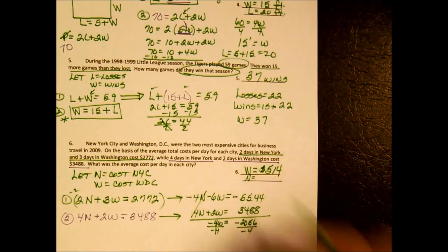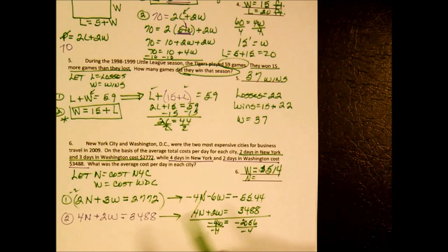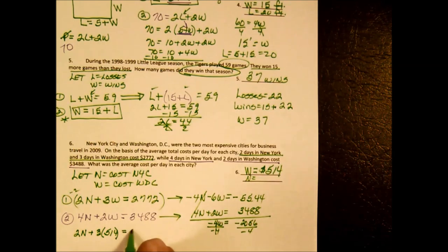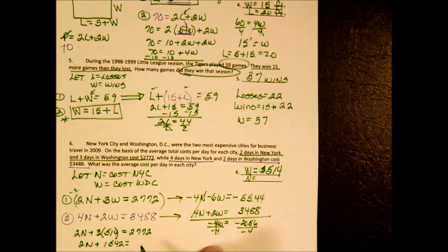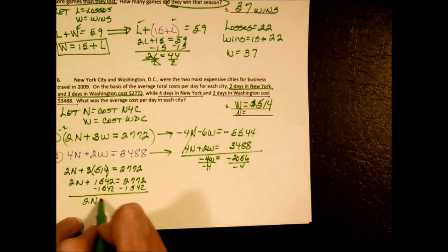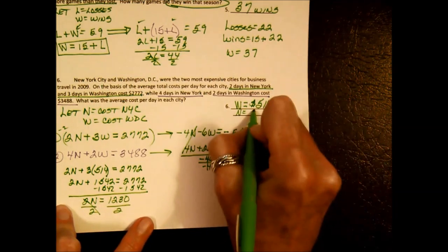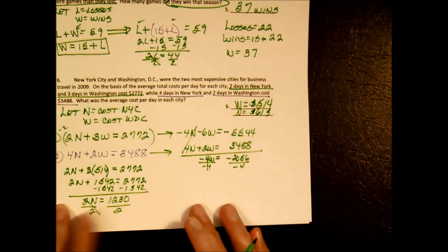One day in Washington costs — doing that division — $514 per day. To find New York, go back to the original equation: 2N plus 3W equals 2,772. Substituting W: 2N plus 3 times 514, which is 1,542, equals 2,772. Subtract 1,542 from both sides: 2N equals 1,230. Divide by 2, and New York costs $615 per day.